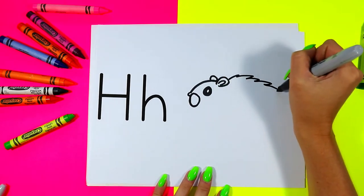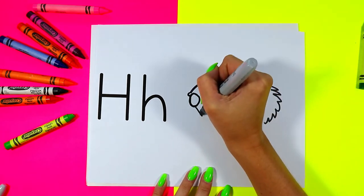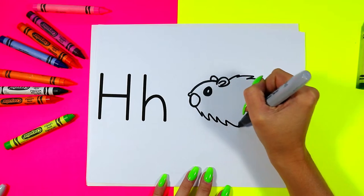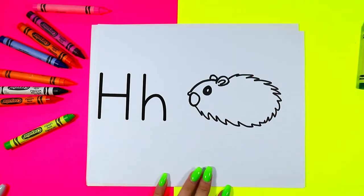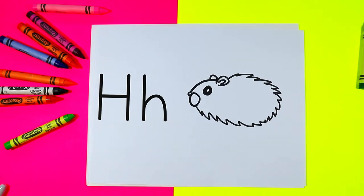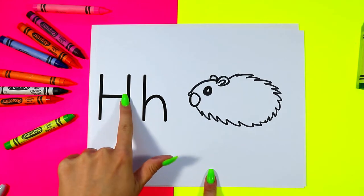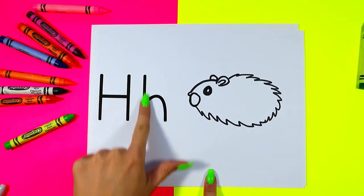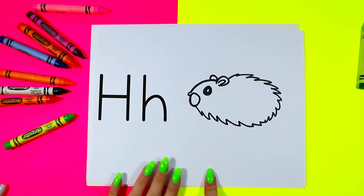Next we're going to make a fluffy little hamster body by drawing zigzag lines in an oval. A nice round body made up of zigzag lines to make some fluffy fur texture as we create our hamster which starts with the letter H. Uppercase letter H and a lowercase letter H. Hamster starts with the letter H.